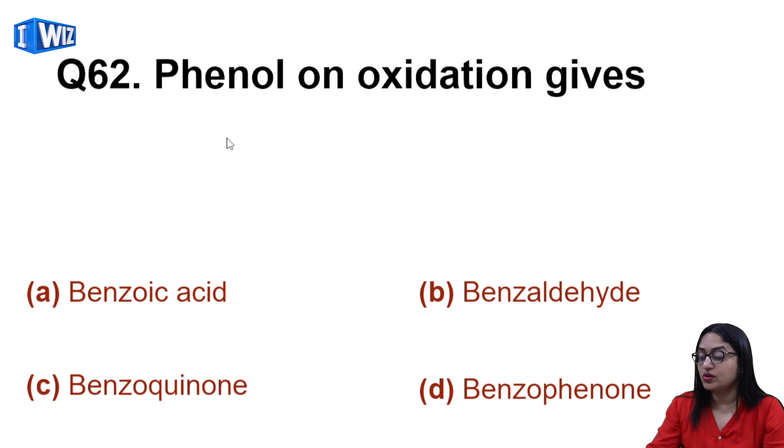Next is phenol on oxidation will give - when you do oxidation of phenol, you get benzoquinone or quinone, so C is the correct answer.